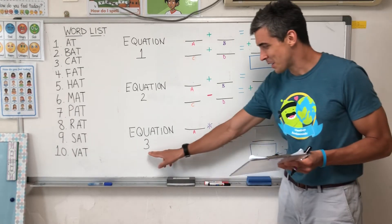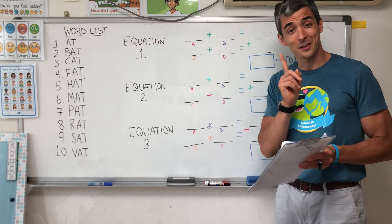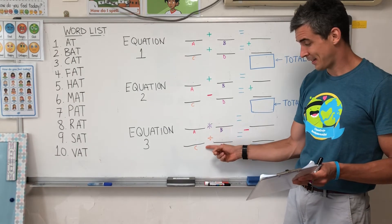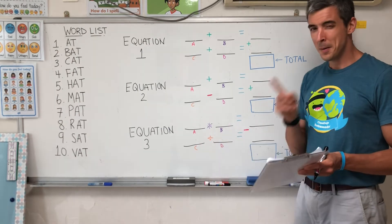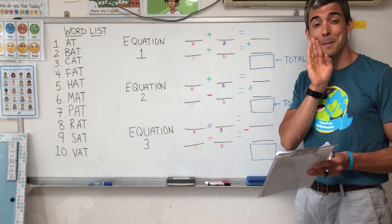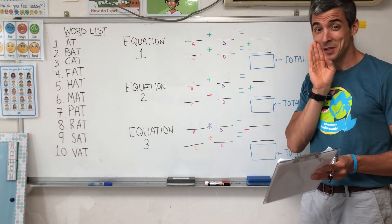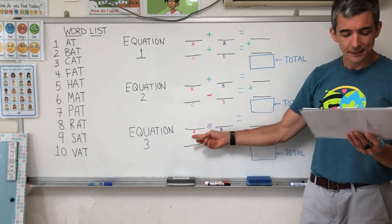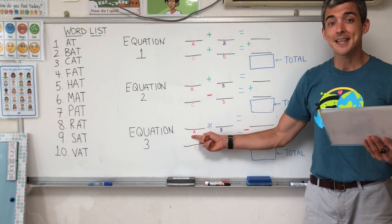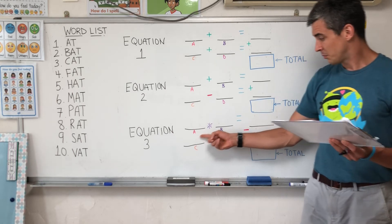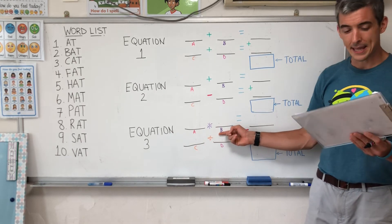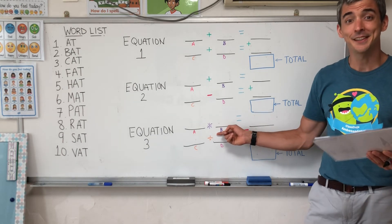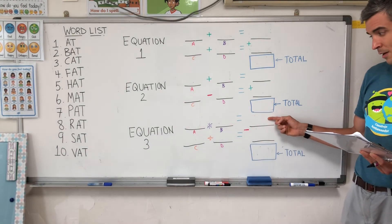Okay last equation number three. This is a little harder. Multiply and divide. Maybe you can ask your mom or dad for some help. Okay letter A. S, s, sat. Multiplied by B. C, c, cat. How many?